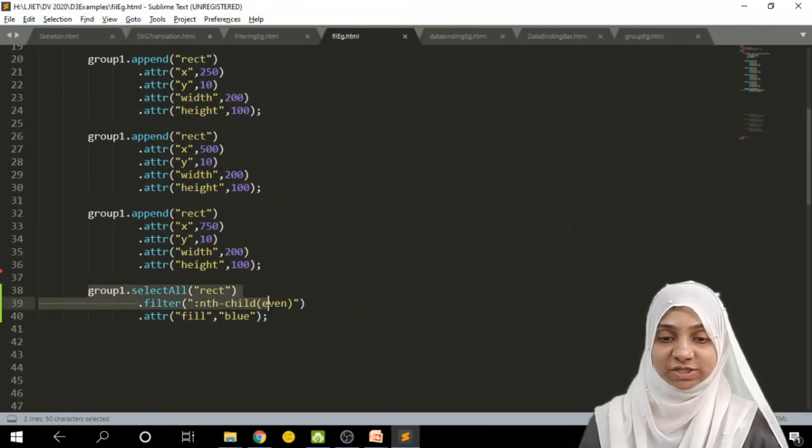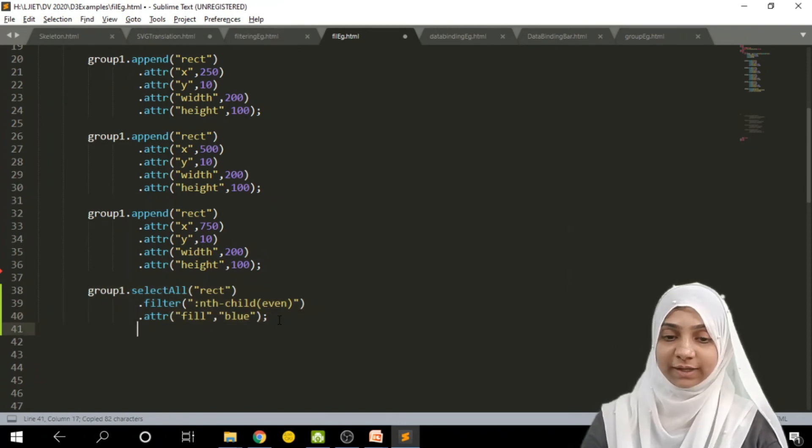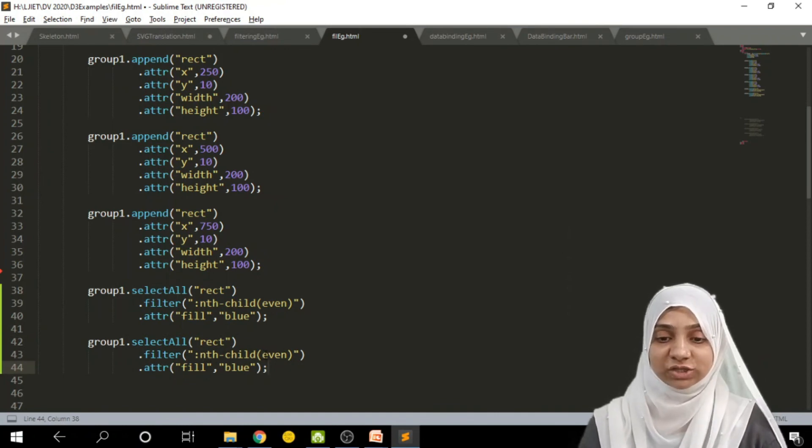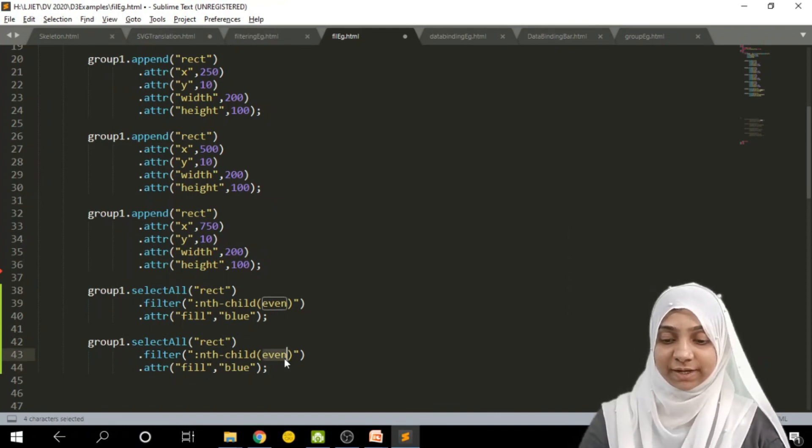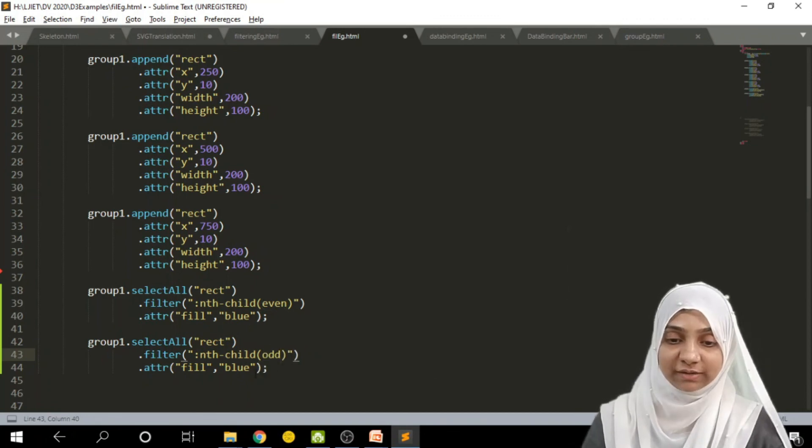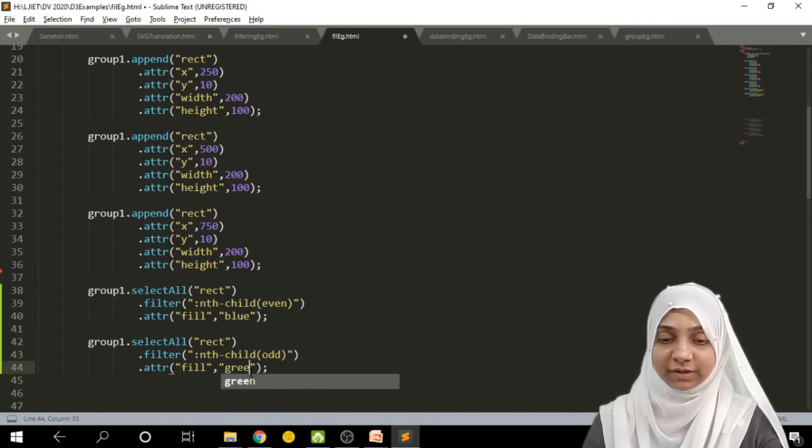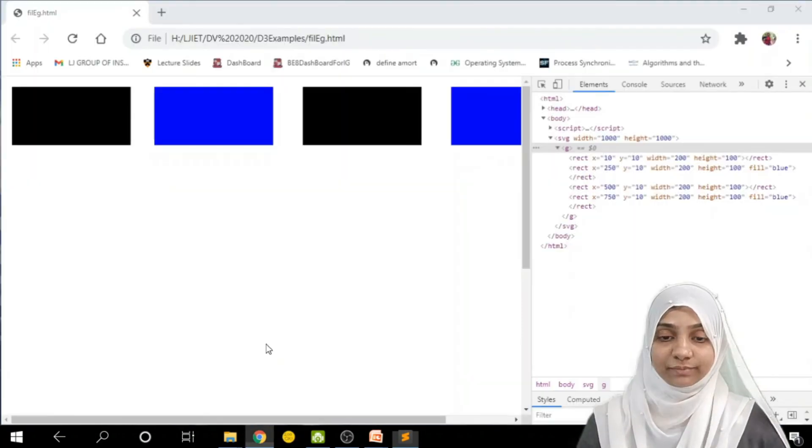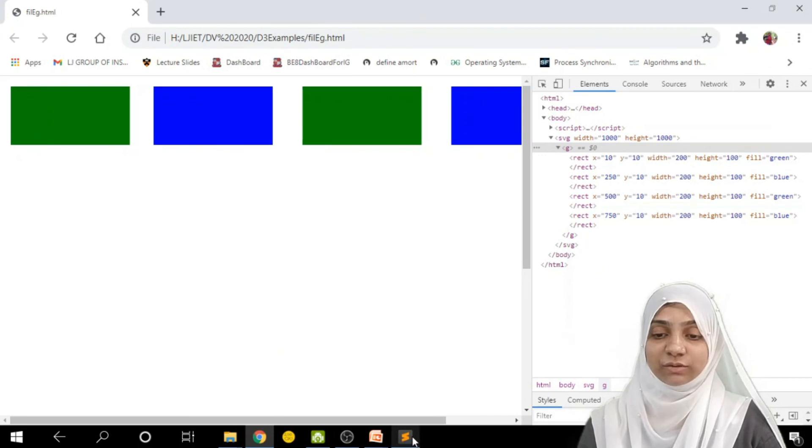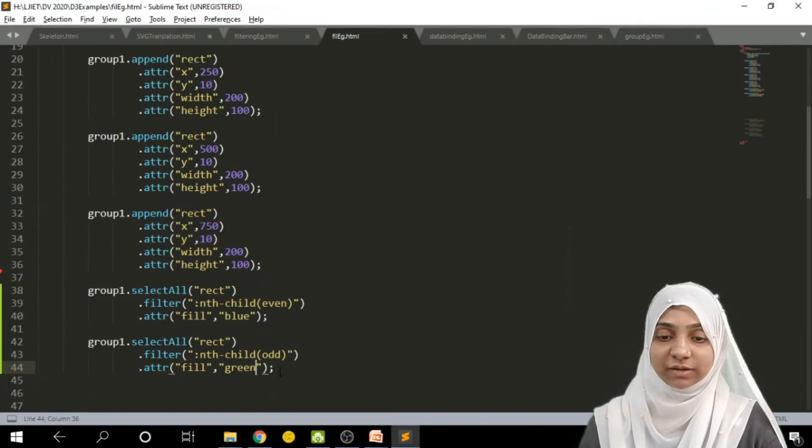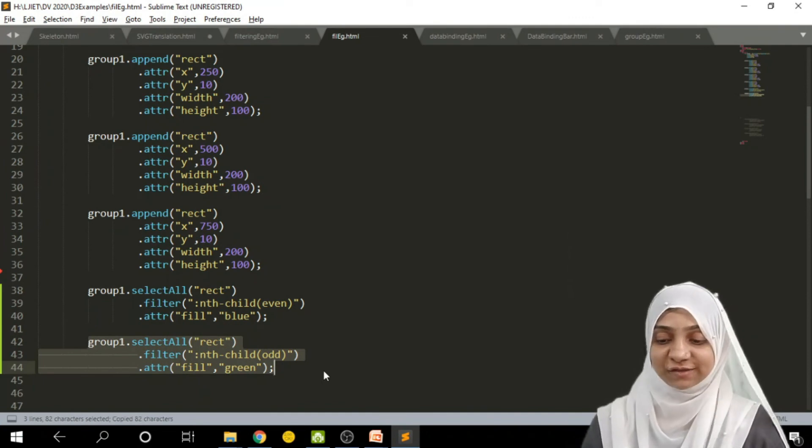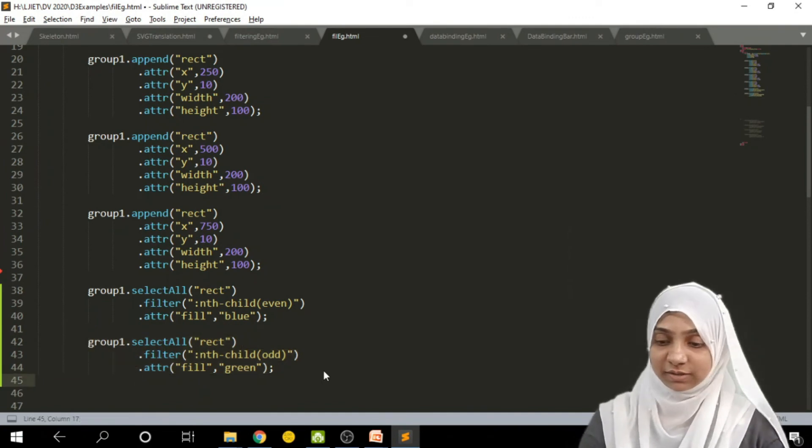Similarly I can change attribute of these rectangles which are odd in its position, so we will simply copy instead of colon nth child even, we will write odd child and can make color some different color. Yes, odd child have been colored with some different color.